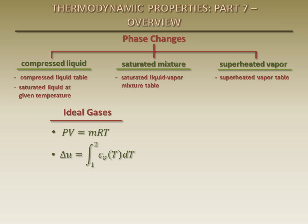Similarly, changes in the specific enthalpy of ideal gases can be found by integrating the specific heat with respect to temperature over the process. Properties of some ideal gases can be found in ideal gas property tables as functions of temperature.